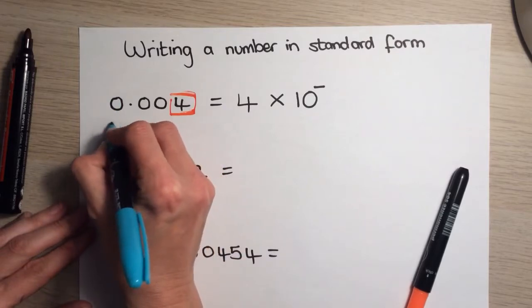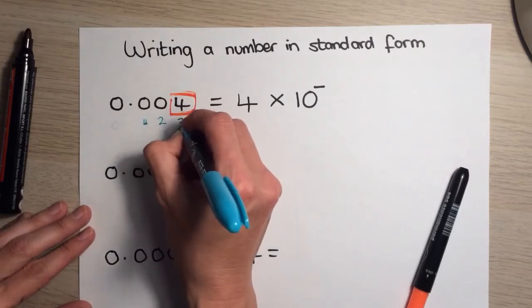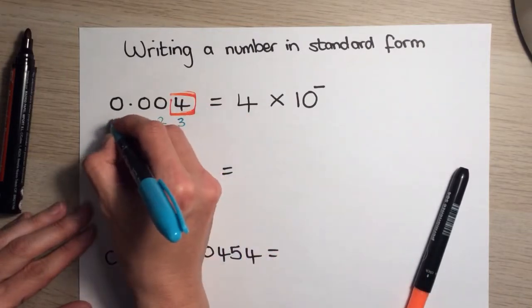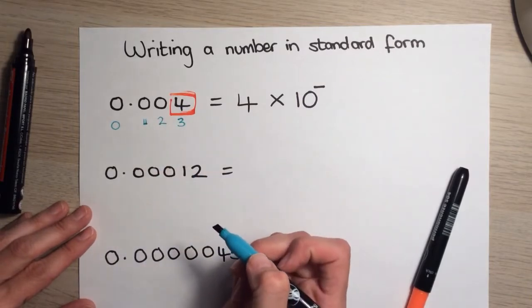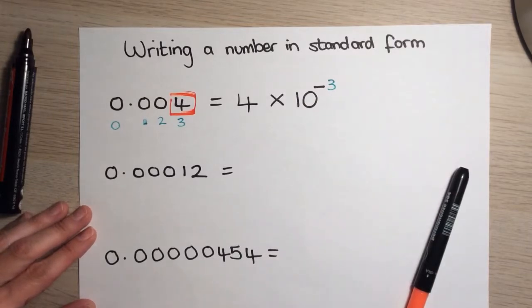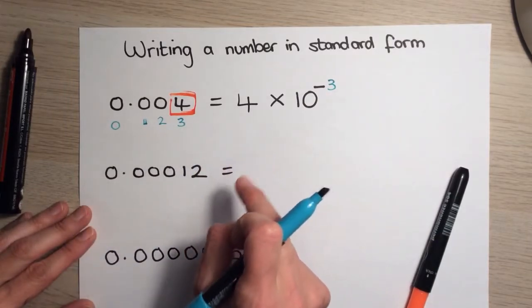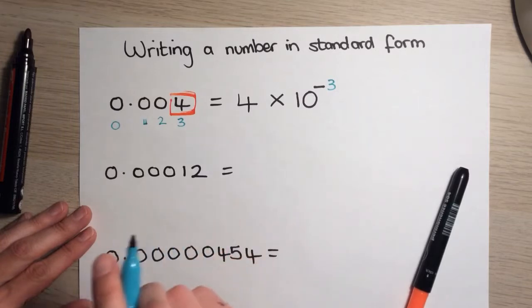So, we're going to start 0, 1, 2, 3. Okay. Now we stop when we get to the first digit that's not 0. And that is my power. So, 0.004 is equal to 4 multiplied by 10 to the power of minus 3.